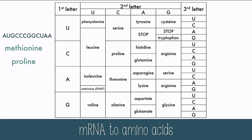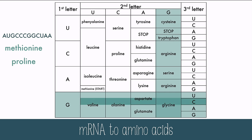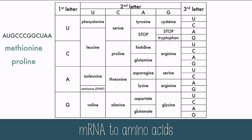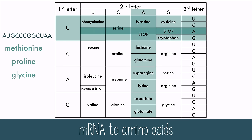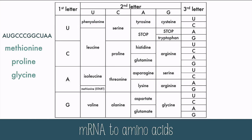Next is GGC: fourth row, fourth column, second row on the right — that gives us glycine. And lastly is UAA: row one, column three, row three — and that gives us stop. There's no amino acid here; it just means that the protein will detach, and it marks the end of protein synthesis.